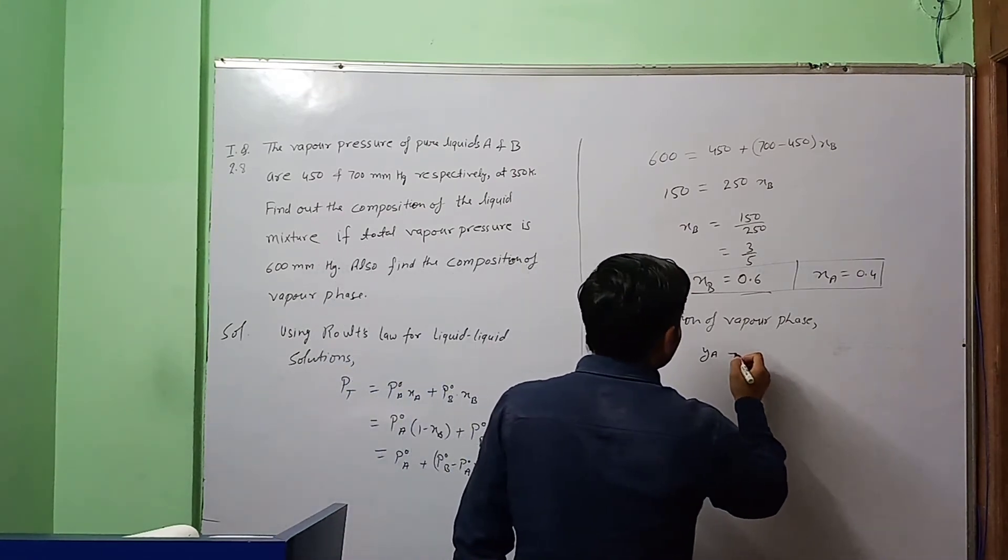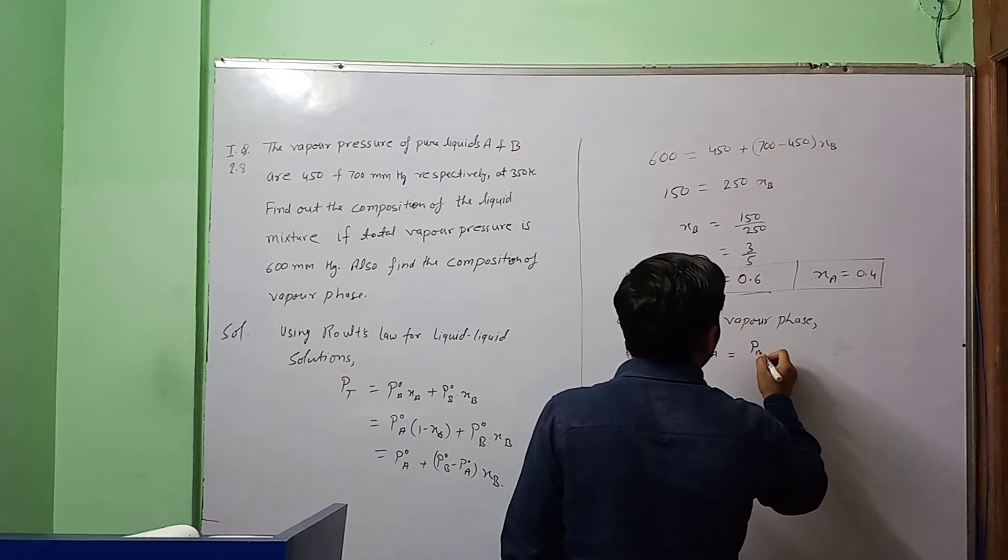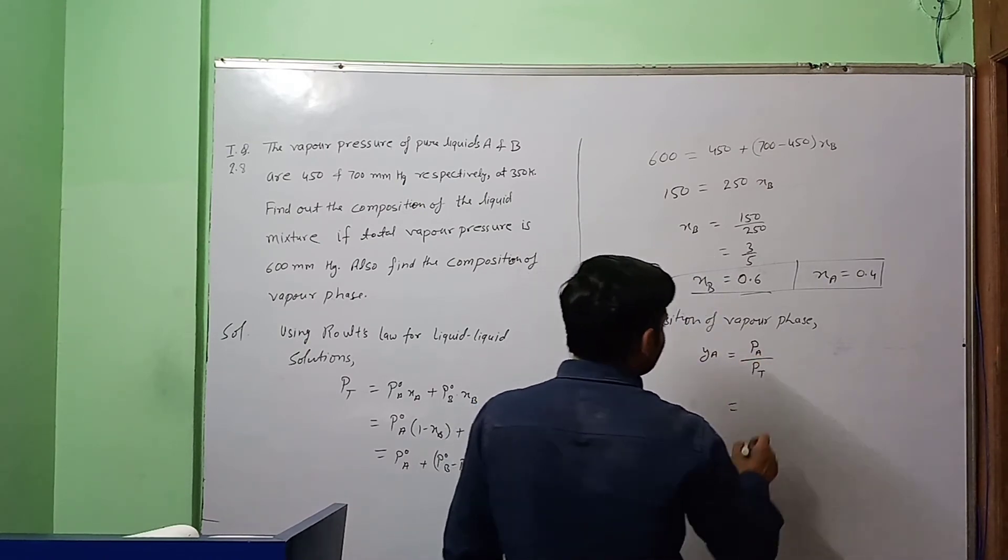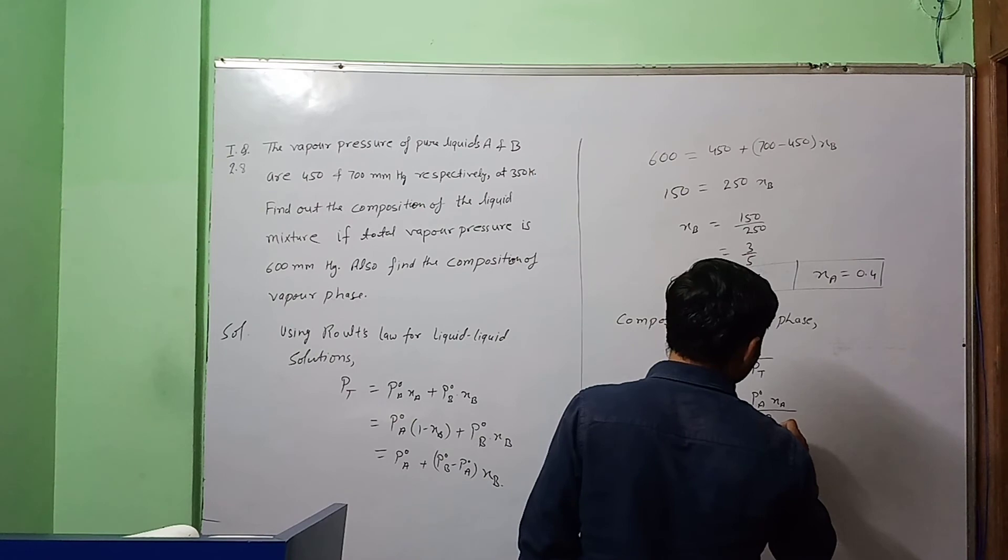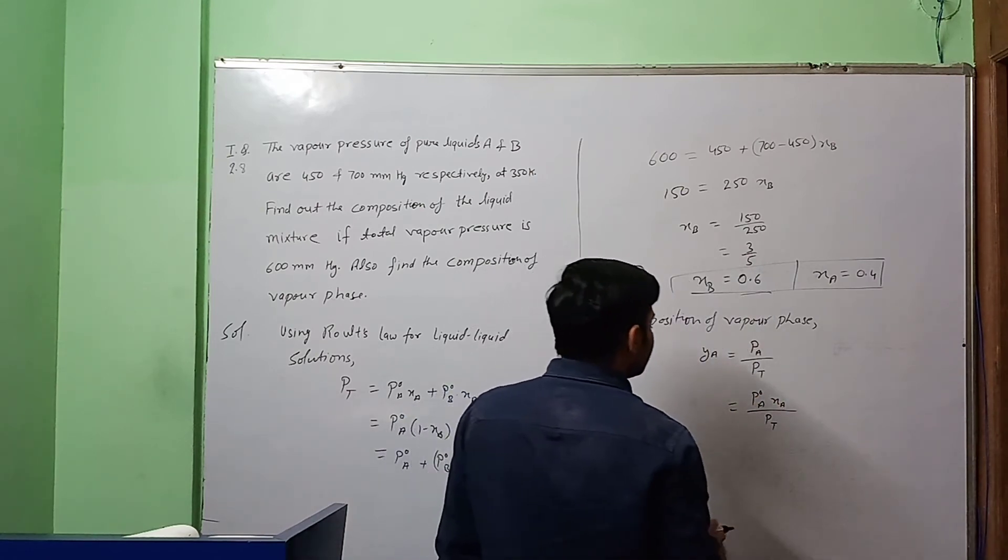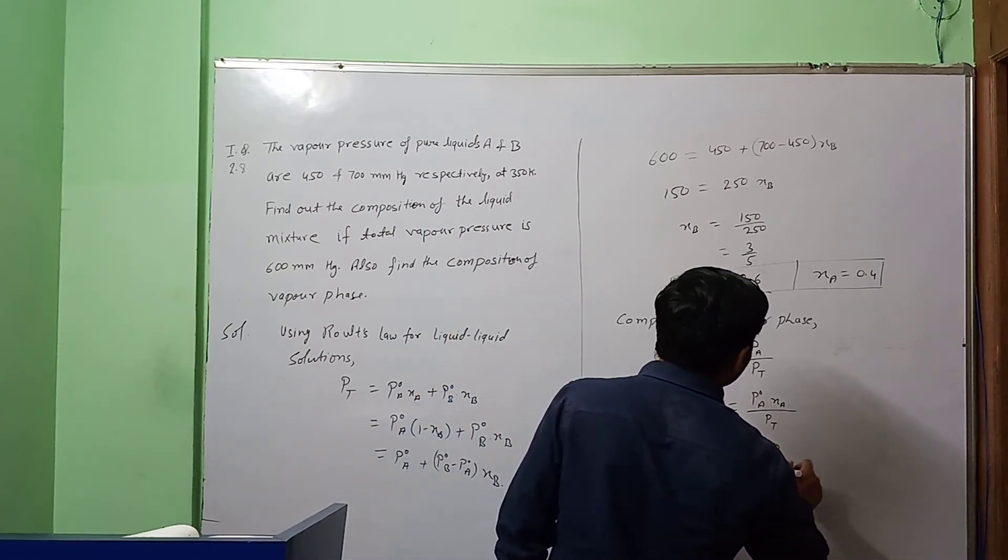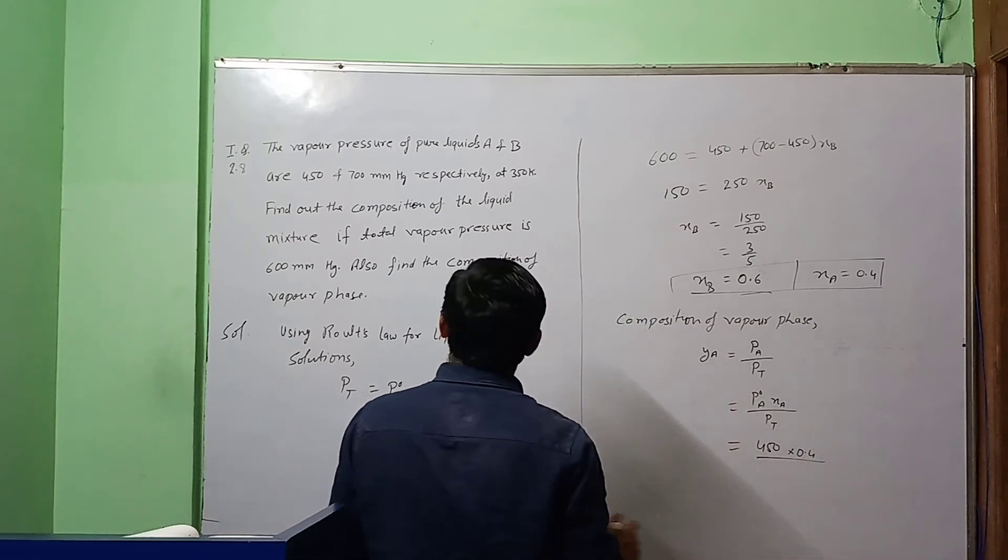YA we can calculate as PA upon P total, and PA can be calculated as P0A into XA upon P total. PA is P0A into XA. P0A is 450, XA is 0.4, and P total is 600.